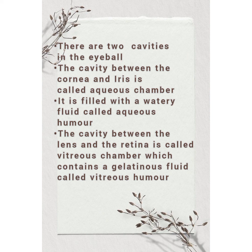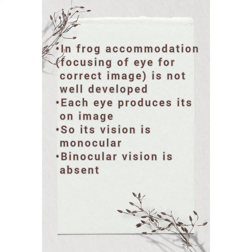There are two cavities in the eyeball. The cavity between the cornea and iris is called the aqueous chamber, filled with a watery fluid called aqueous humour. The cavity between the lens and the retina is called the vitreous chamber, which contains a gelatinous fluid called vitreous humour. In frog, accommodation — the focusing of the eye for a correct image — is not well developed. Each eye produces its own image, so its vision is monocular; binocular vision is absent.